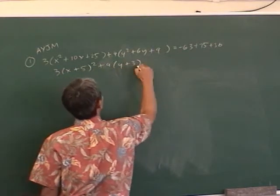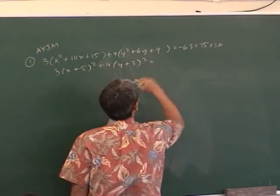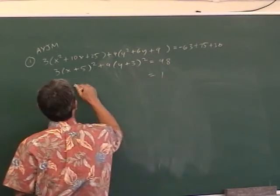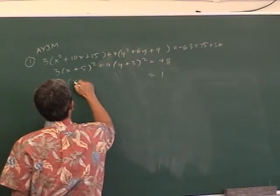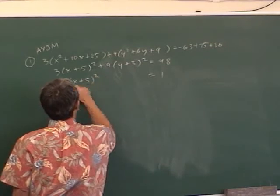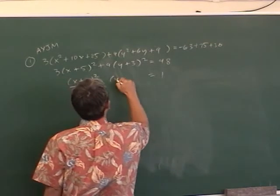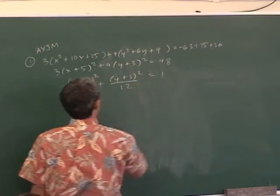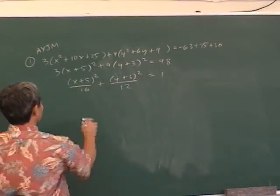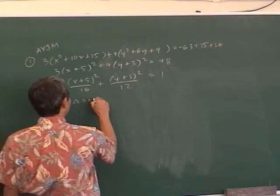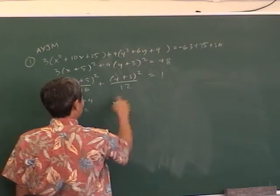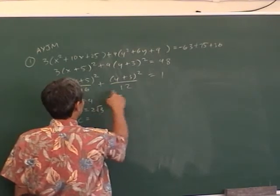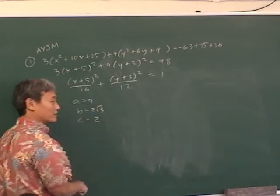You add nine but you actually added 36. So 3(x + 5)² plus 4(y + 3)² equals 48. Subtracting 47 from both sides, you get (x + 5)² over 16 plus (y + 3)² over 12. So a is 4, b is 2√3, and c² equals a² minus b², so c is 2.